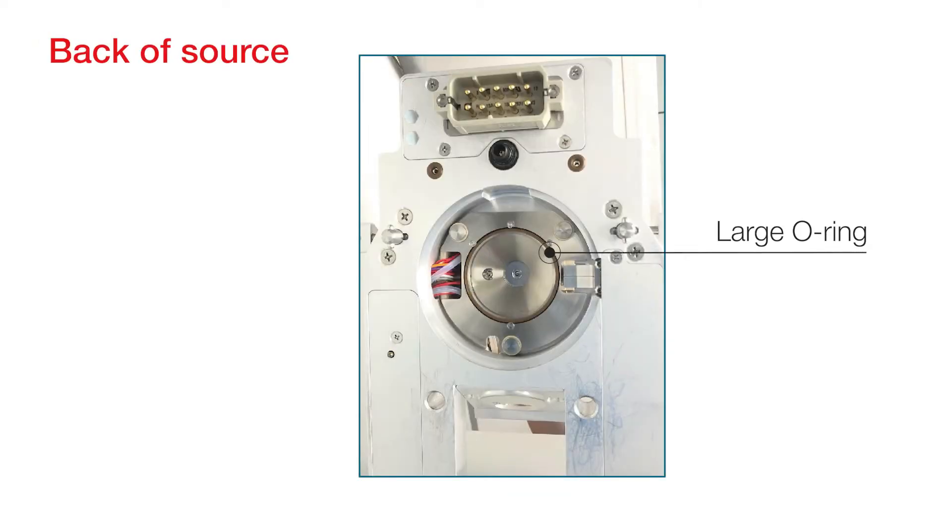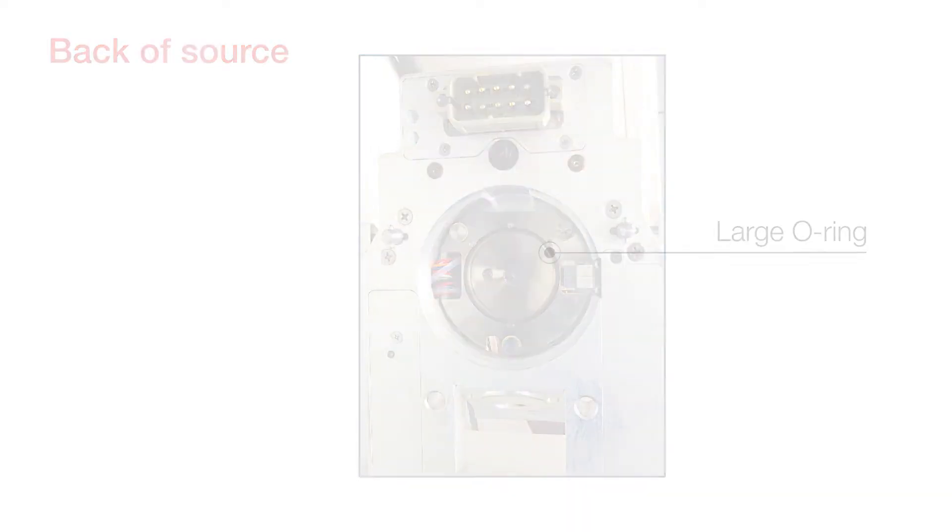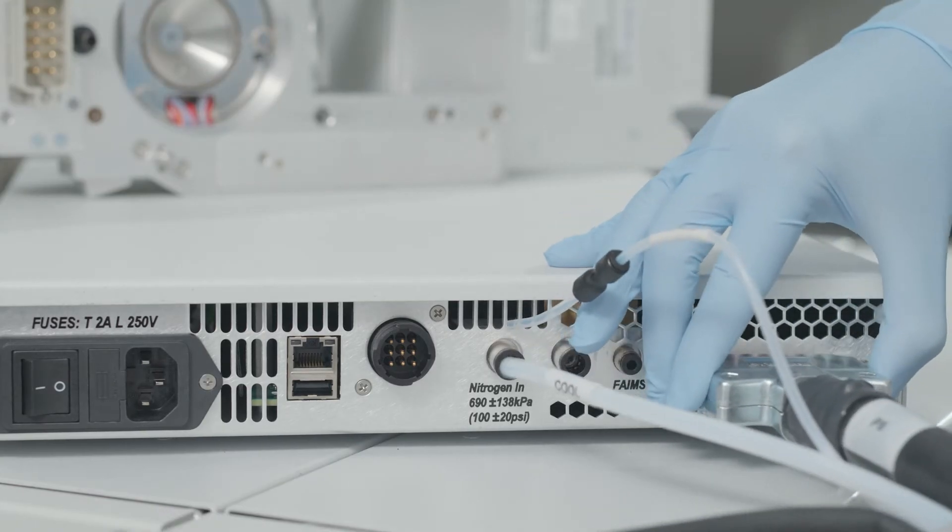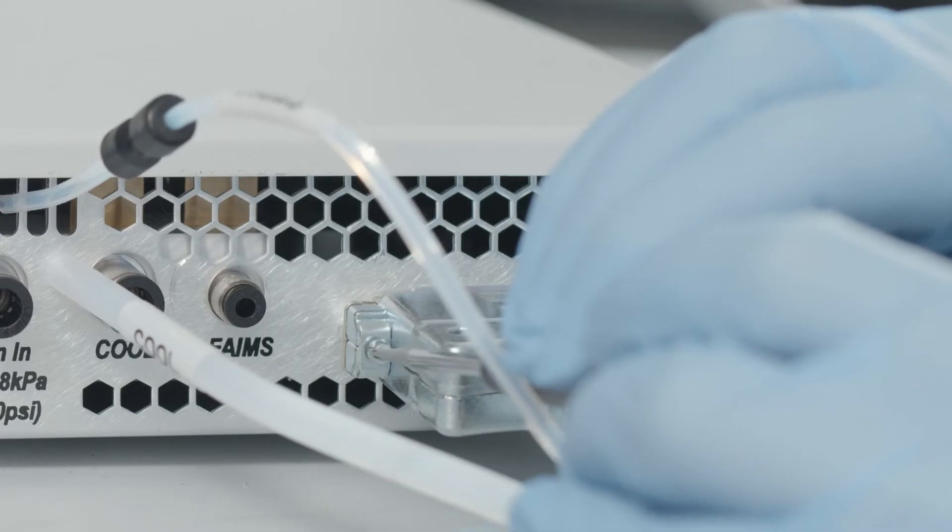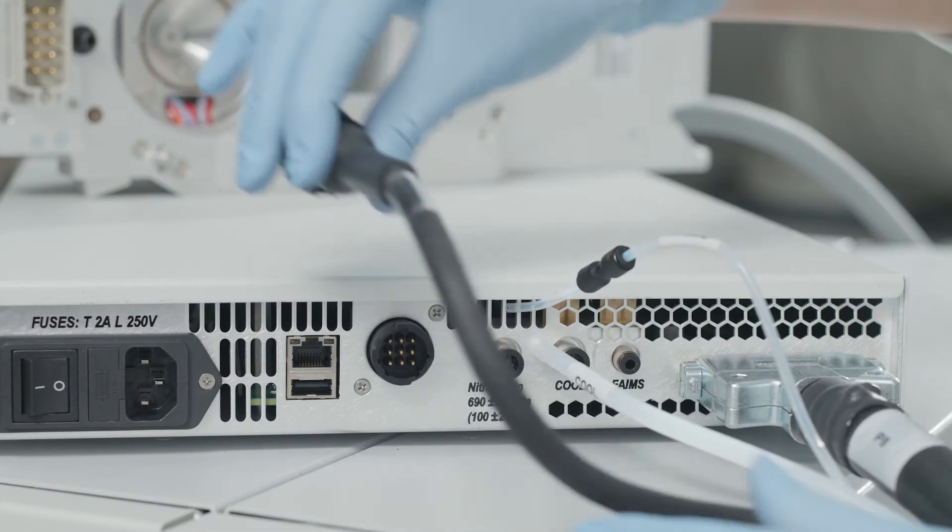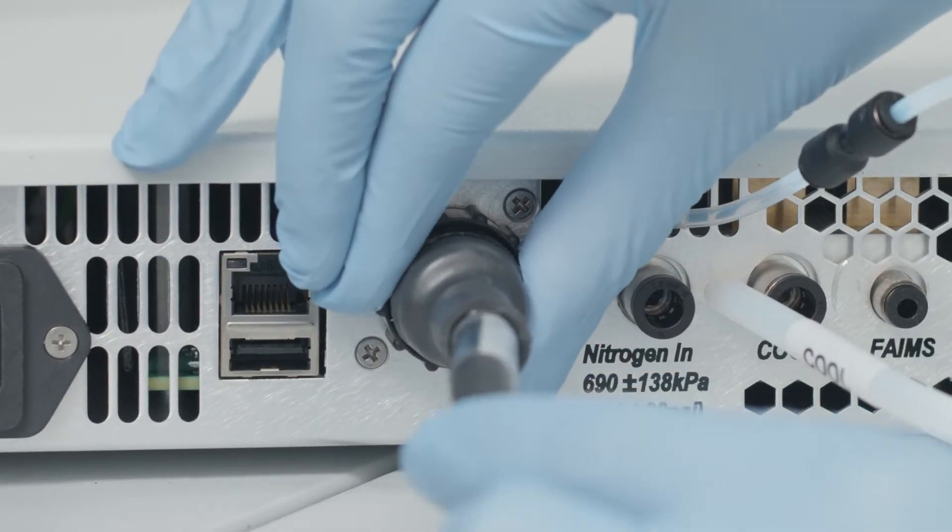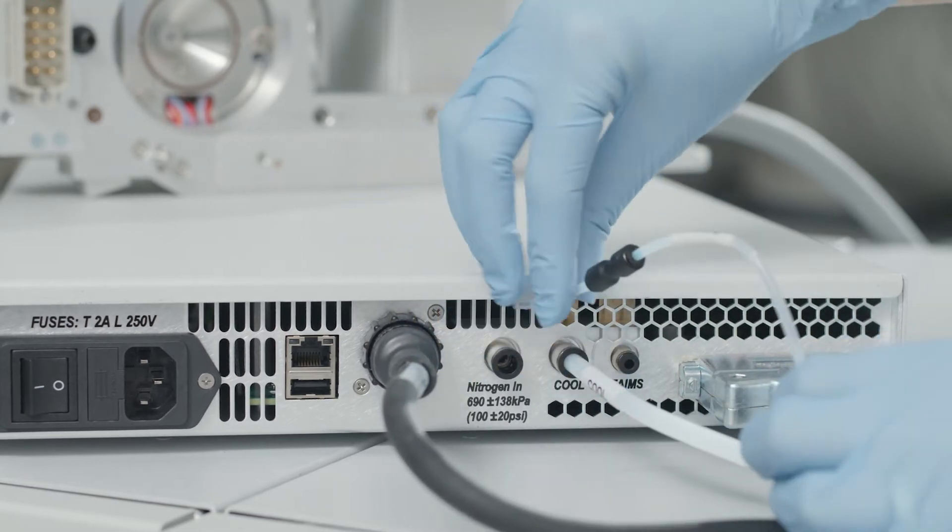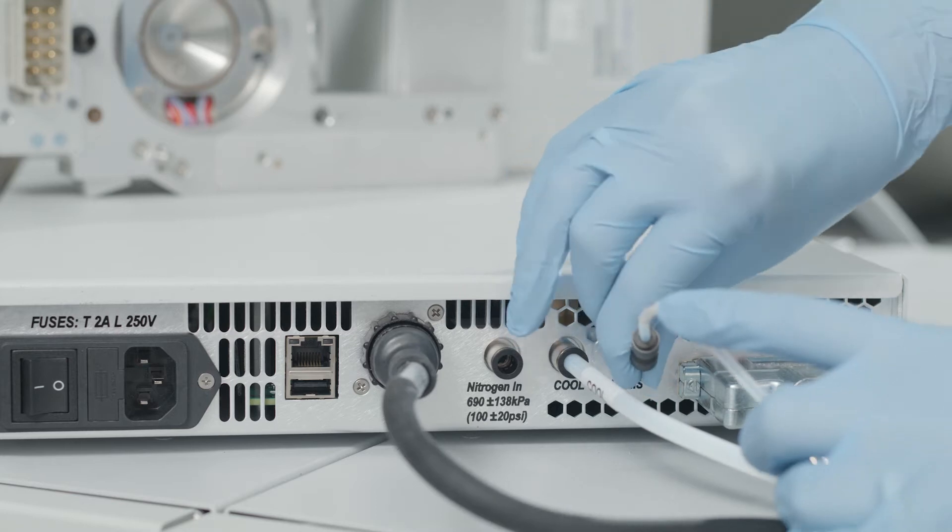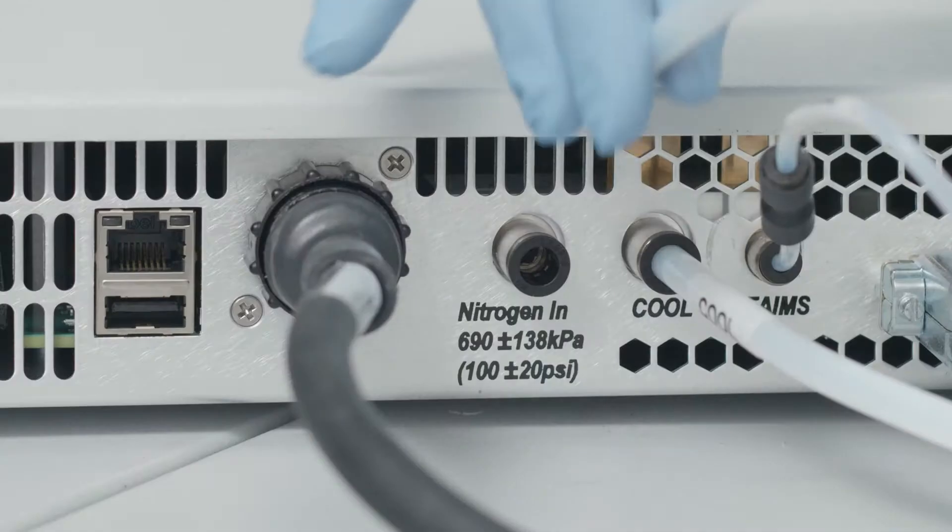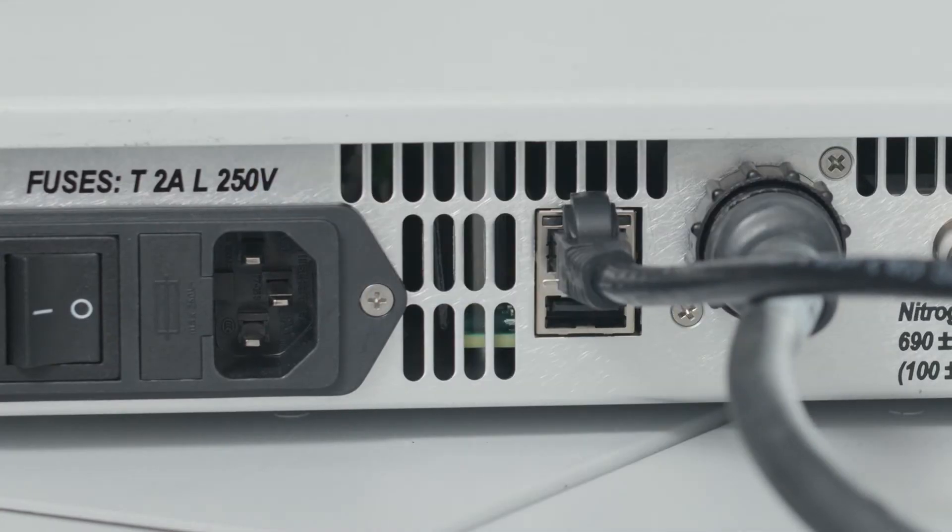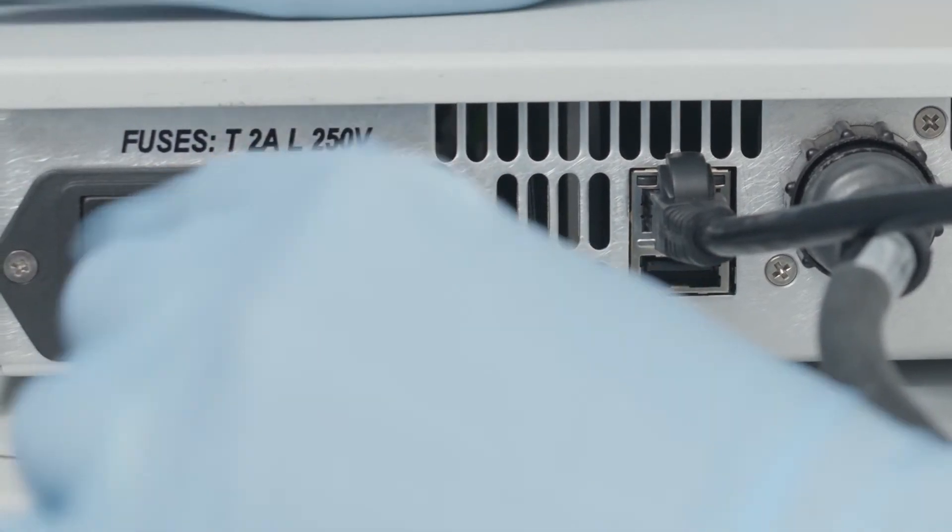Then check the placement of the large O-ring on the back of the FAIMS unit. Put the main control box, or MCB, on top of the instrument. Install the signal connector, high voltage connector, cooling gas line, FAIMS carrier gas line, nitrogen input line, ethernet connector, and power cable into the back of the main control box.